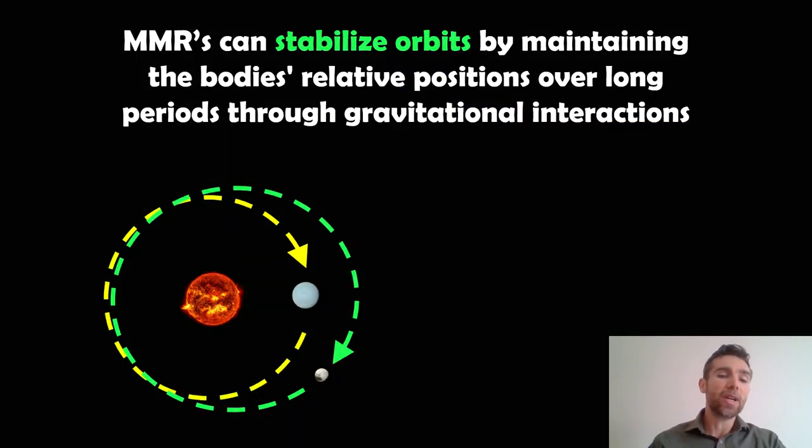These mean motion resonances can stabilize orbits. They can maintain the bodies' relative positions over a long period of time through their gravitational interactions. An example is Neptune and Pluto. Neptune keeps Pluto on its orbit despite it crossing Neptune's orbit and being elliptical. They can have a stabilizing effect.